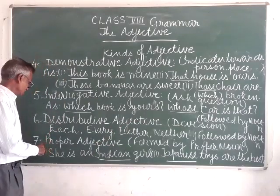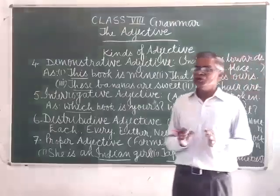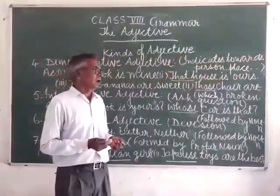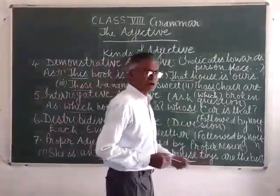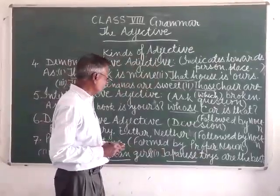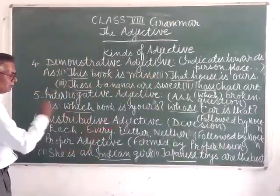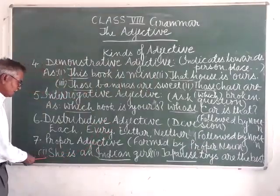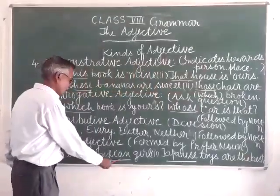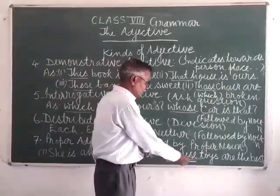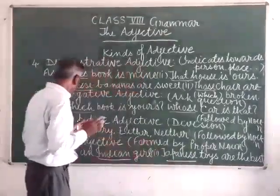Now we come to the last kind of adjective, that is the proper adjective. This word denotes something proper, distinct, or unique. Proper adjectives are formed from proper nouns, which we have already studied. For example: 'She is an Indian girl' and 'Japanese toys are the best.' Here the words Indian and Japanese denote the proper adjective.